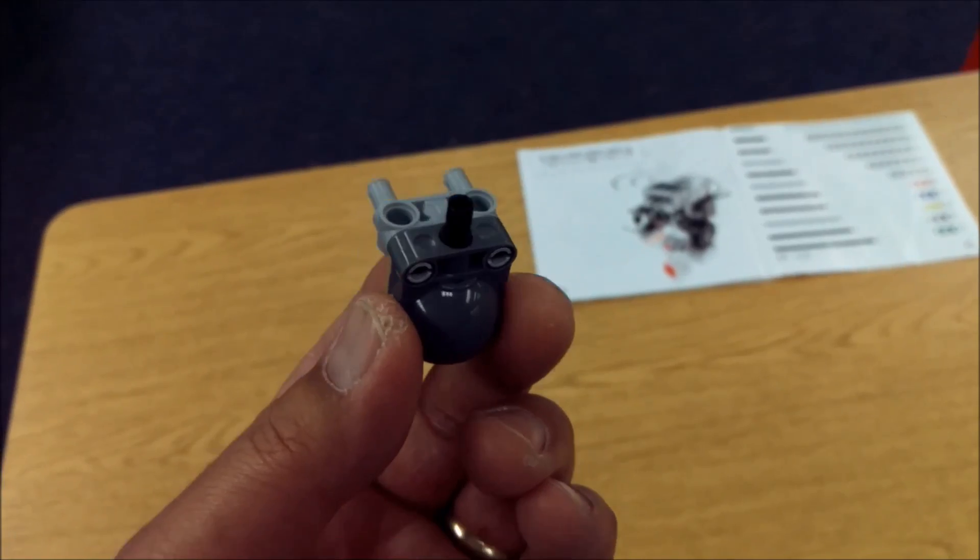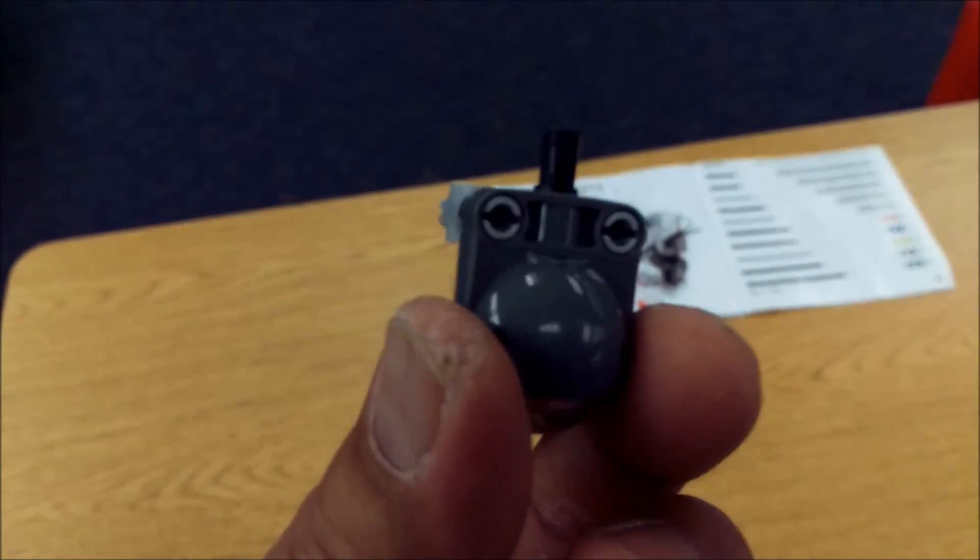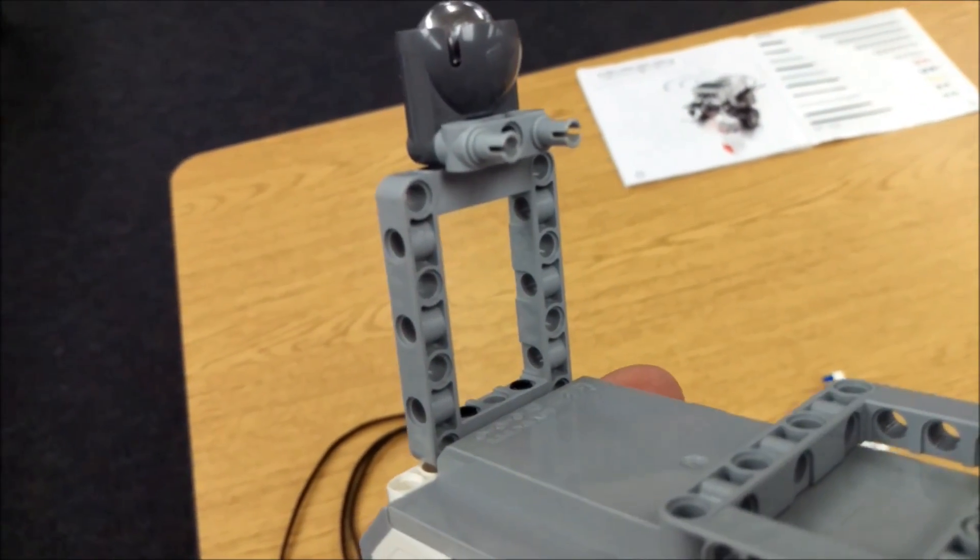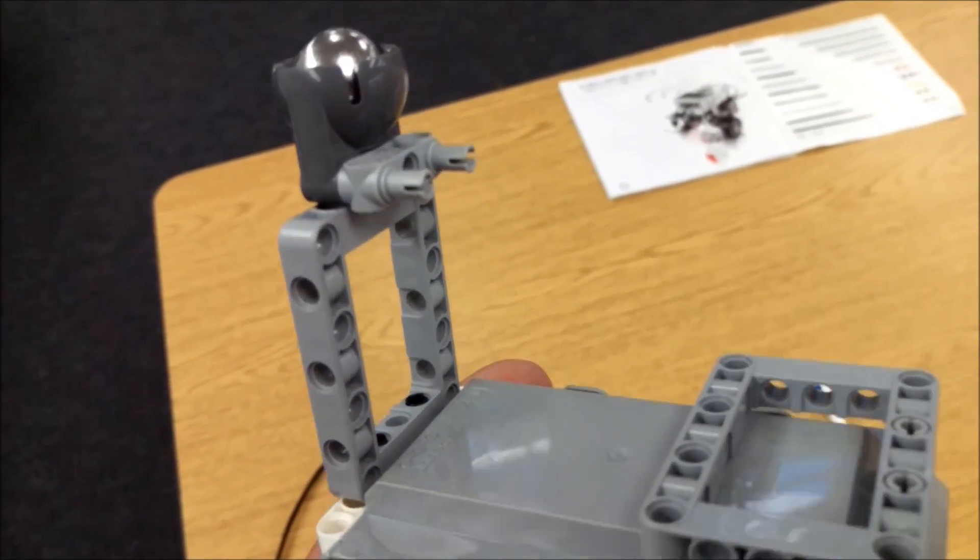I hope you have a black connector piece. I don't know if I miscounted, but you'll place it into the top of the caster like so. And then you'll place it into that gray square like so.